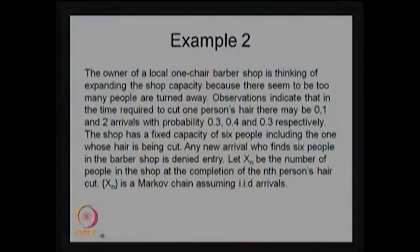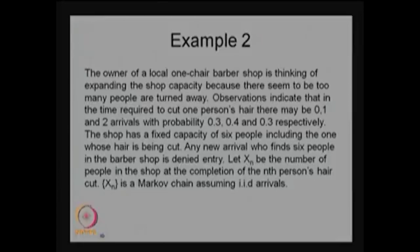Now I am moving into the second example. In this example I have taken the barbershop example which I have discussed in module one also. The owner of a local one-chair barbershop is thinking of expanding the shop capacity because there seem to be too many people being turned away. Observations indicate that in the time required to cut one person's hair there may be 0, 1, or 2 arrivals with the probability 0.3, 0.4, and 0.3 respectively.